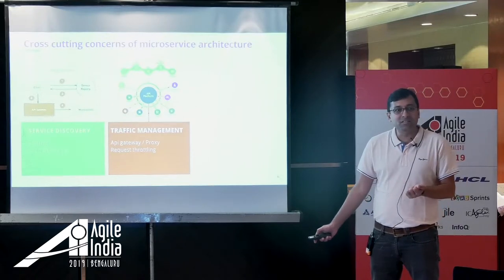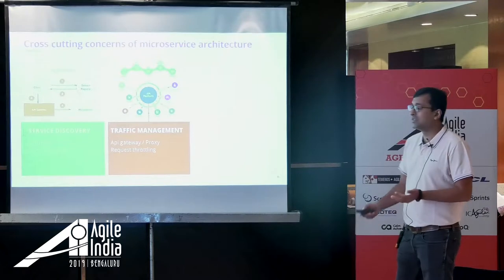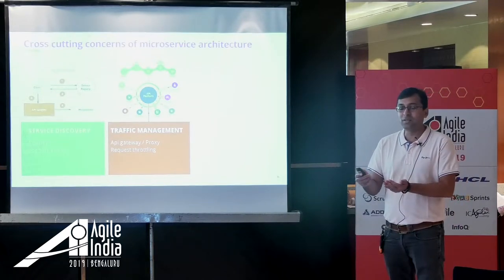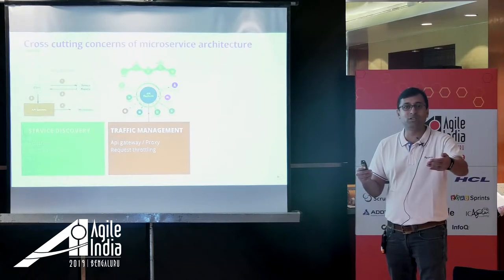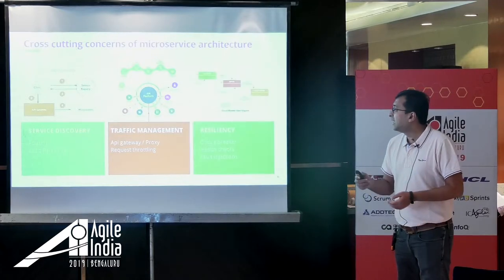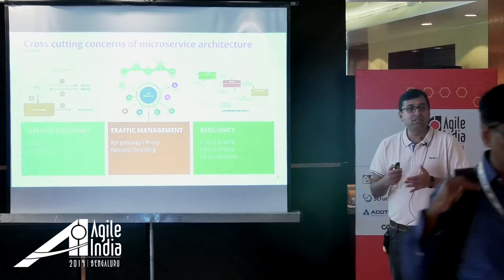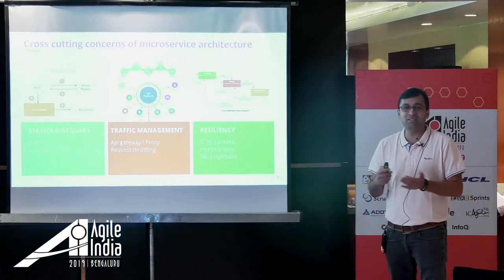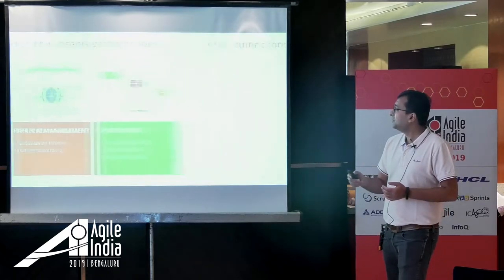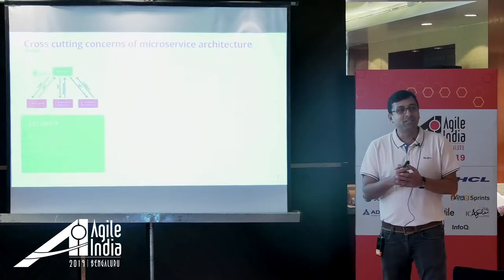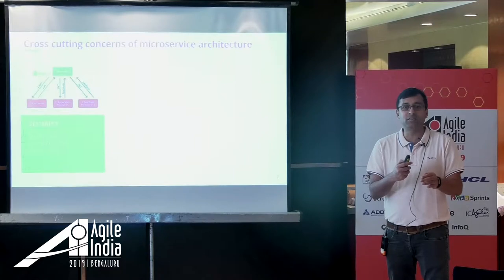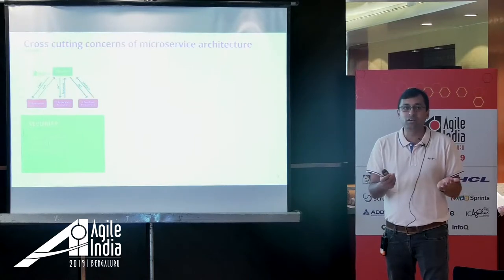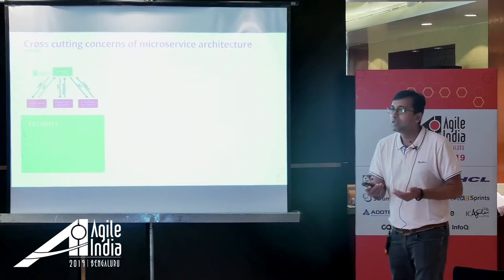Traffic management and throttling is also a key requirement. One service bombarding another service and bringing down services for everybody else - you have to make sure you have certain throttling implemented. If one service goes bad, that is the only culprit that gets affected. Then resiliency - circuit breakers, health checks, fault injection - all that has to be done. Security is very important. Zero trust - I don't want one service to trust another service by default. There should be some authentication mechanism, authorization, and they should be talking over SSL with secure connections, not open on HTTP.